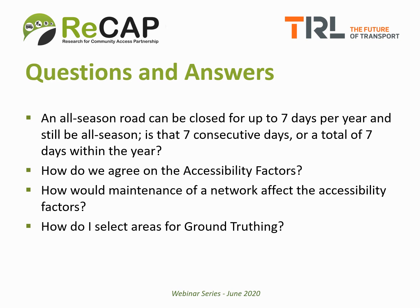Fourth and final question: how do I select areas for ground truthing? Firstly, a broad assessment should be made of the high and low risk areas within the country based on climate and terrain as described earlier. Then advice should be taken from local engineers to select districts that would be representative of each area, and the ground truthing should be carried out in those areas. If there is potential variation within an area, then two or three districts should be ground-truthed and the results averaged across them to produce the relevant accessibility factor.